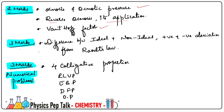Next, 3-marks questions: in Chemistry, 3-marks is usually divided as 2+1. It's rarely asked as a direct 3-marks theory. Usually numericals are asked, but here 3-marks theory includes: difference between ideal and non-ideal solutions, and difference between positive and negative deviation from Raoult's Law. Combinations like reverse osmosis — explain with diagram and application — give 2 marks for explanation and 1 mark for application, making 3 marks.